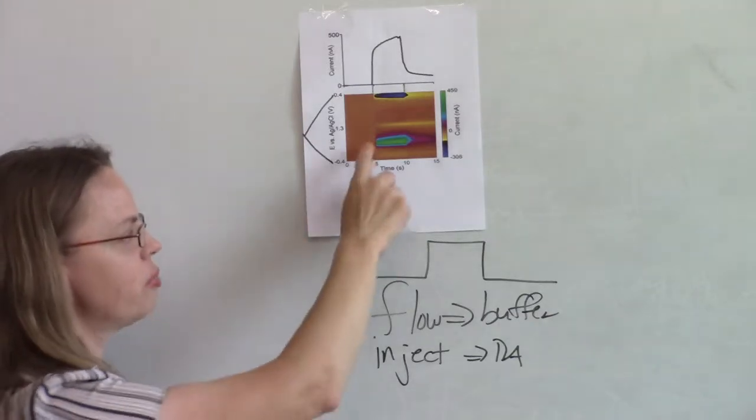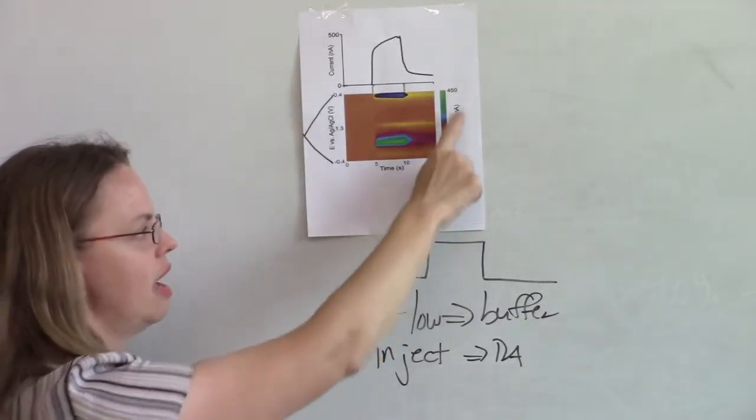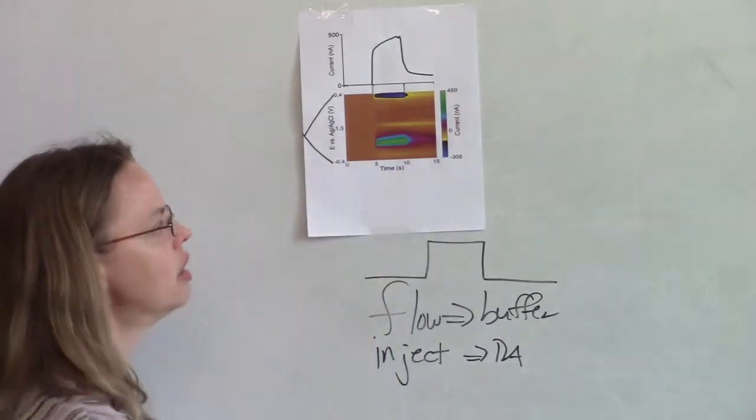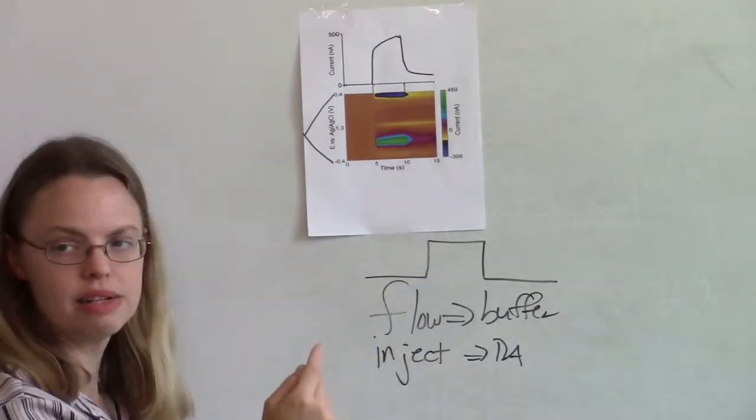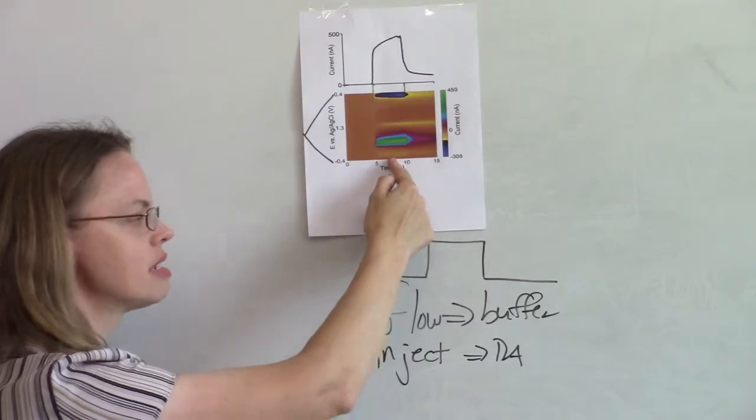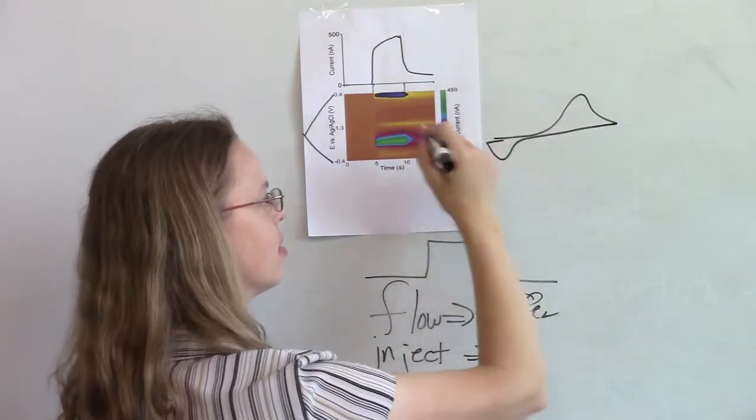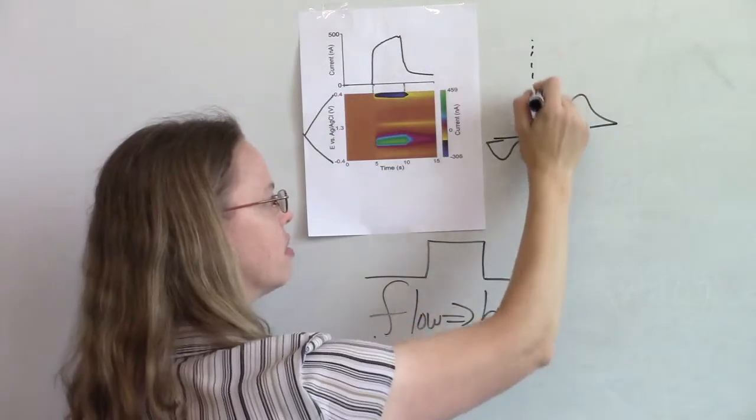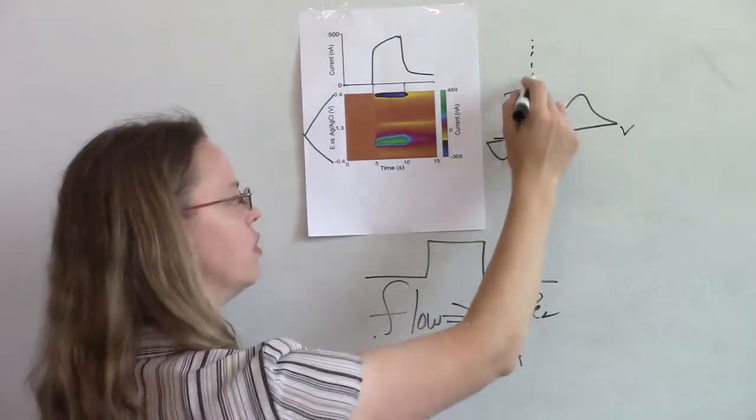So we can take this color plot then that shows a bunch of CVs, so this is time on the x-axis and current again is in color. If we take a slice through it this way, that gives us that CV that we've been talking about. So this would be a vertical slice through. That's the plot, right? Again, current versus voltage.